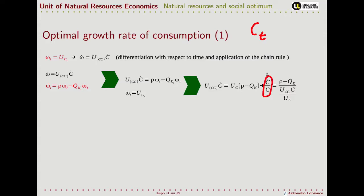If you remember the assumptions we made about utility as a function of consumption: here is consumption and here is utility. What we said is that utility as a function of consumption increases, but it is concave — with a concave pattern. That is, the first derivative, the marginal utility, is positive, but the second derivative is negative, and consumption is positive.